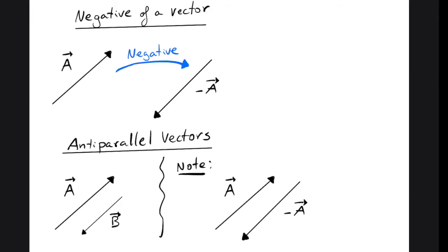Now let's look at anti-parallel vectors. We define anti-parallel vectors a and b when they have opposite directions. I want you to note that when two vectors have the same magnitude but are in opposite directions — meaning when we have the negative of a vector — the vectors are said to be anti-parallel as well.